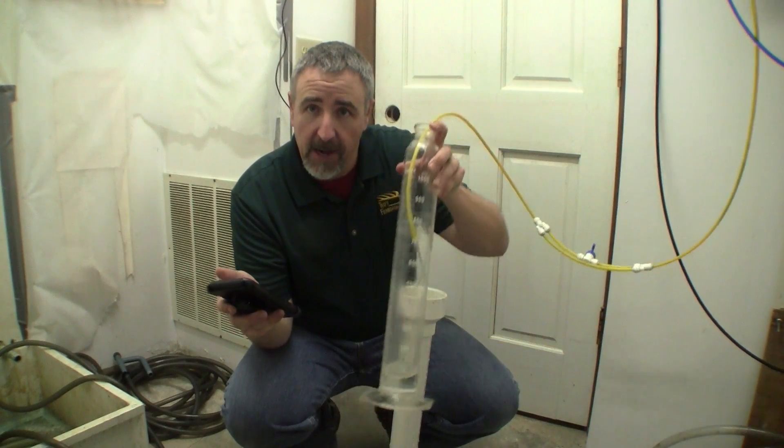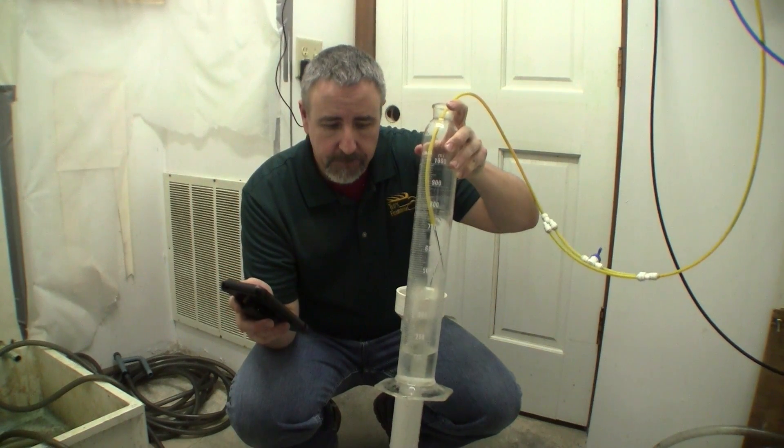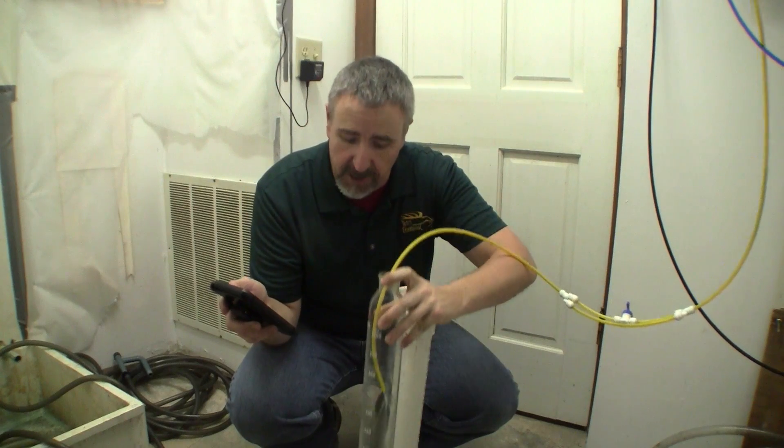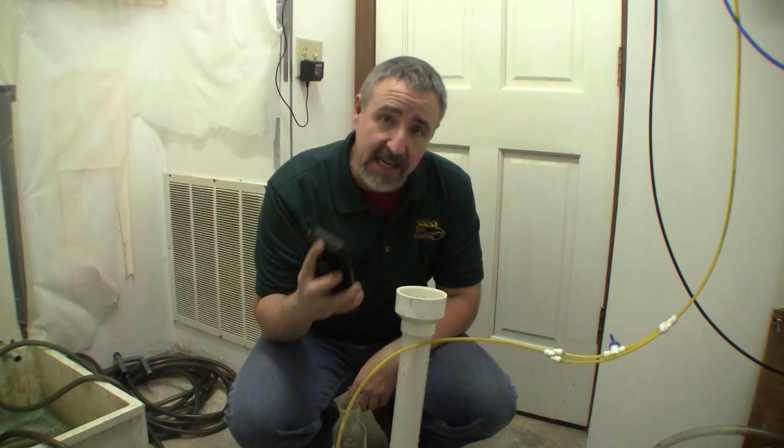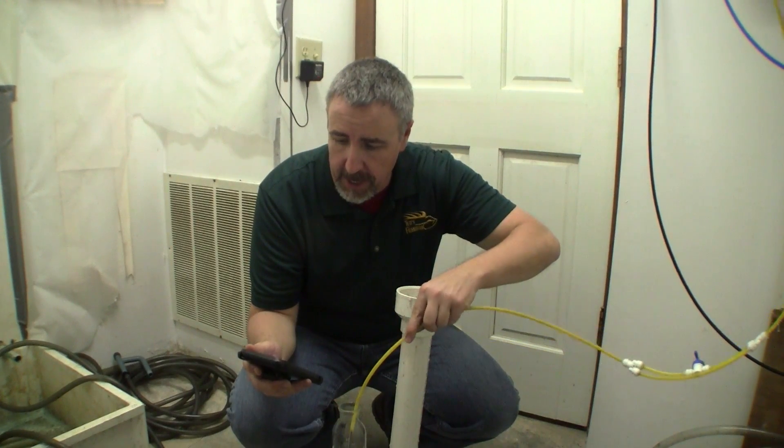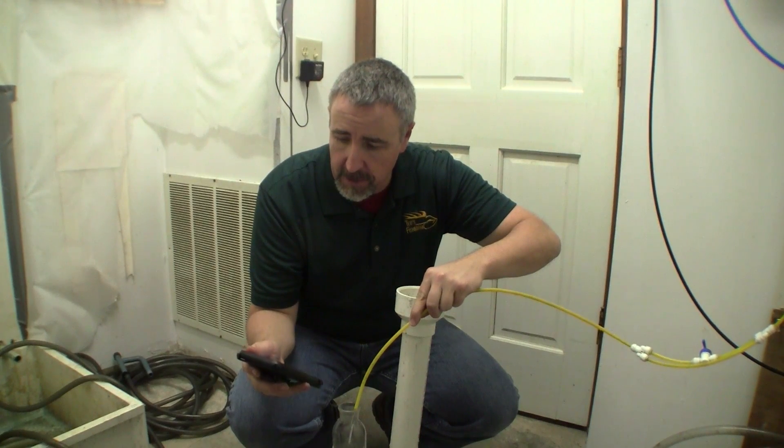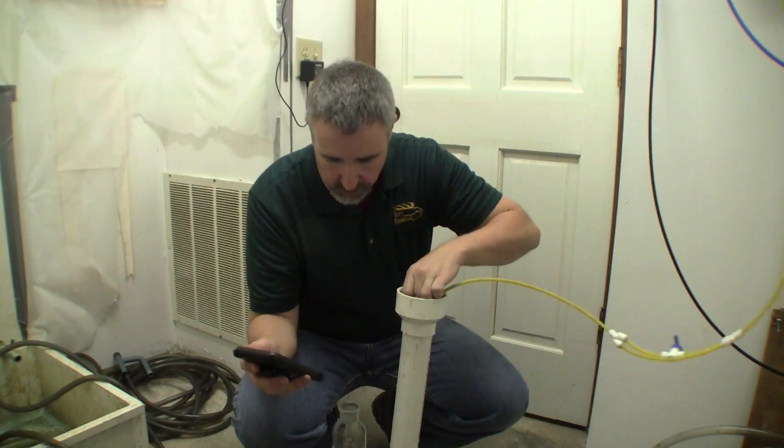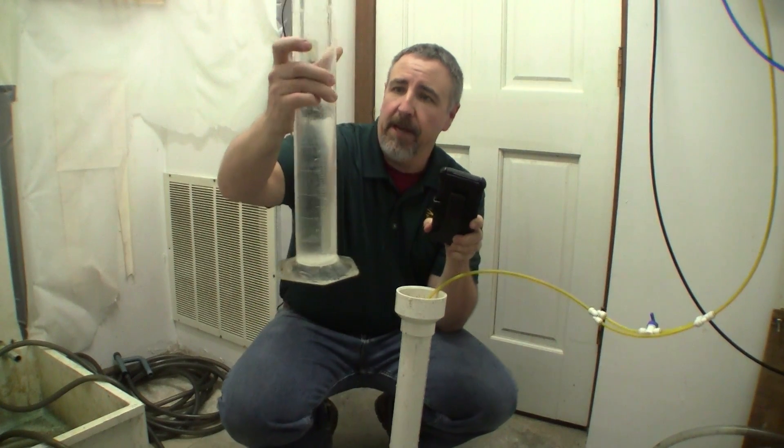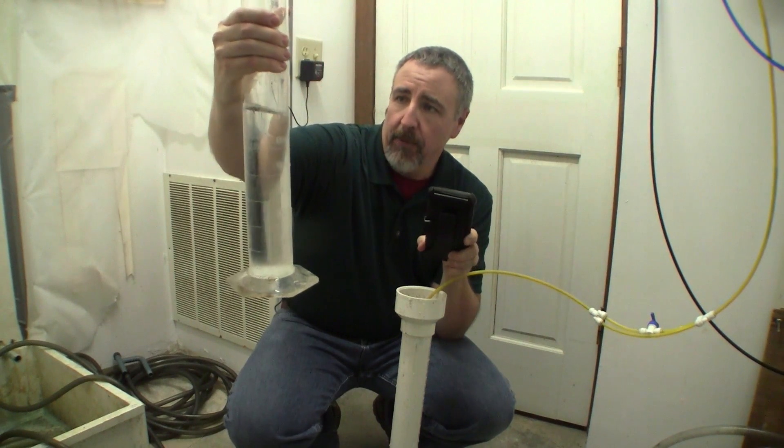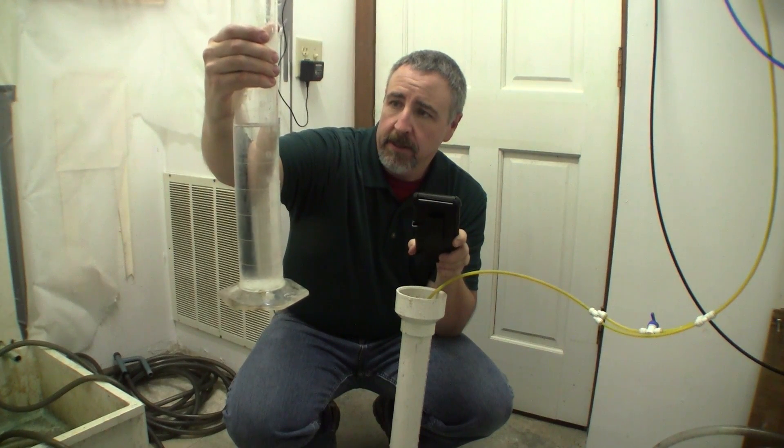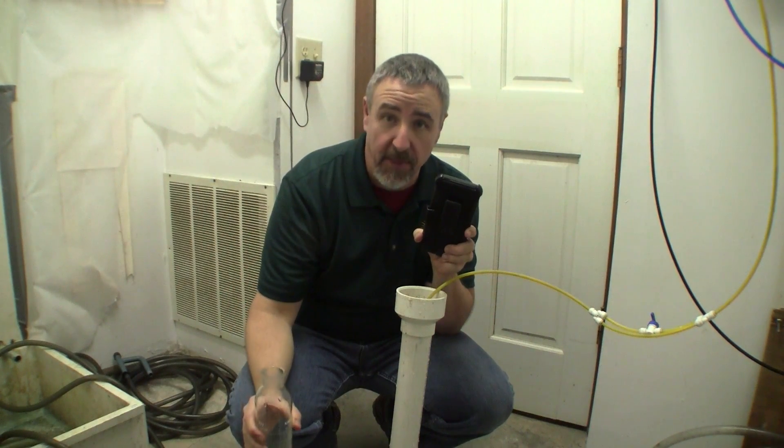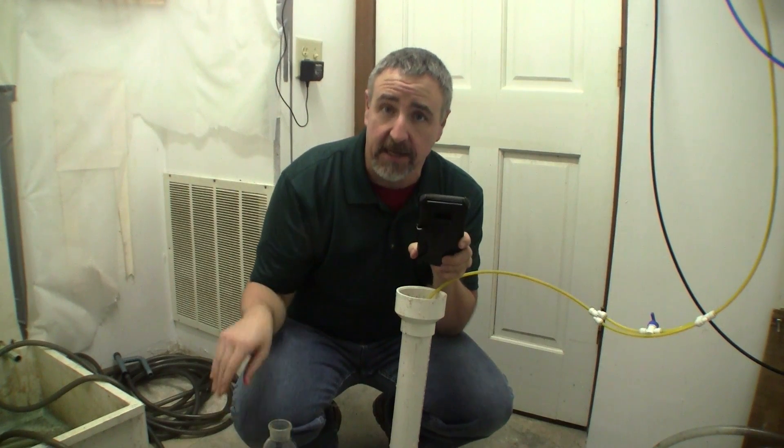Okay, so the graduated cylinder is filling up. When it gets to 30 seconds, I'll take a measurement, dump the water out, and then we'll do the exact same thing over on the RO side. Three, two, one, stop. Okay. So I'm measuring and we've made 630 milliliters of wastewater in 30 seconds.